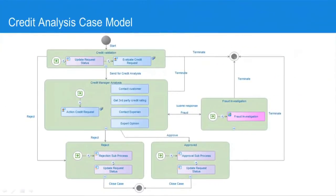Referring back to the case model, we can see that we have just performed the credit validation step whilst logged in as Charlotte in the role of credit agent, and now the task has moved on to the credit manager analysis phase. So the next thing we need to do is log in as a credit manager and analyse the credit request, and we will also see we have the ability to perform the follow-up actions manually as discussed before.